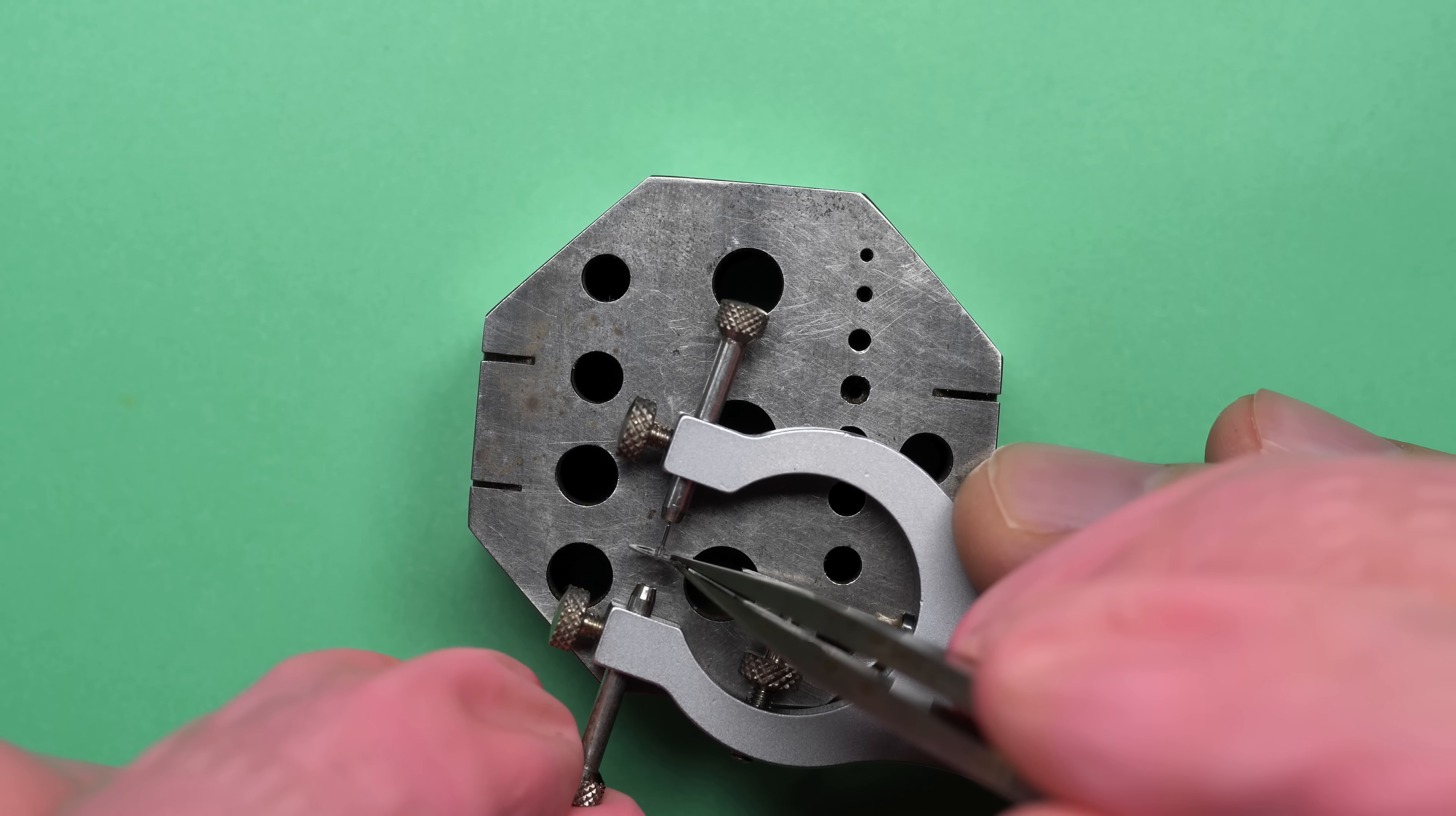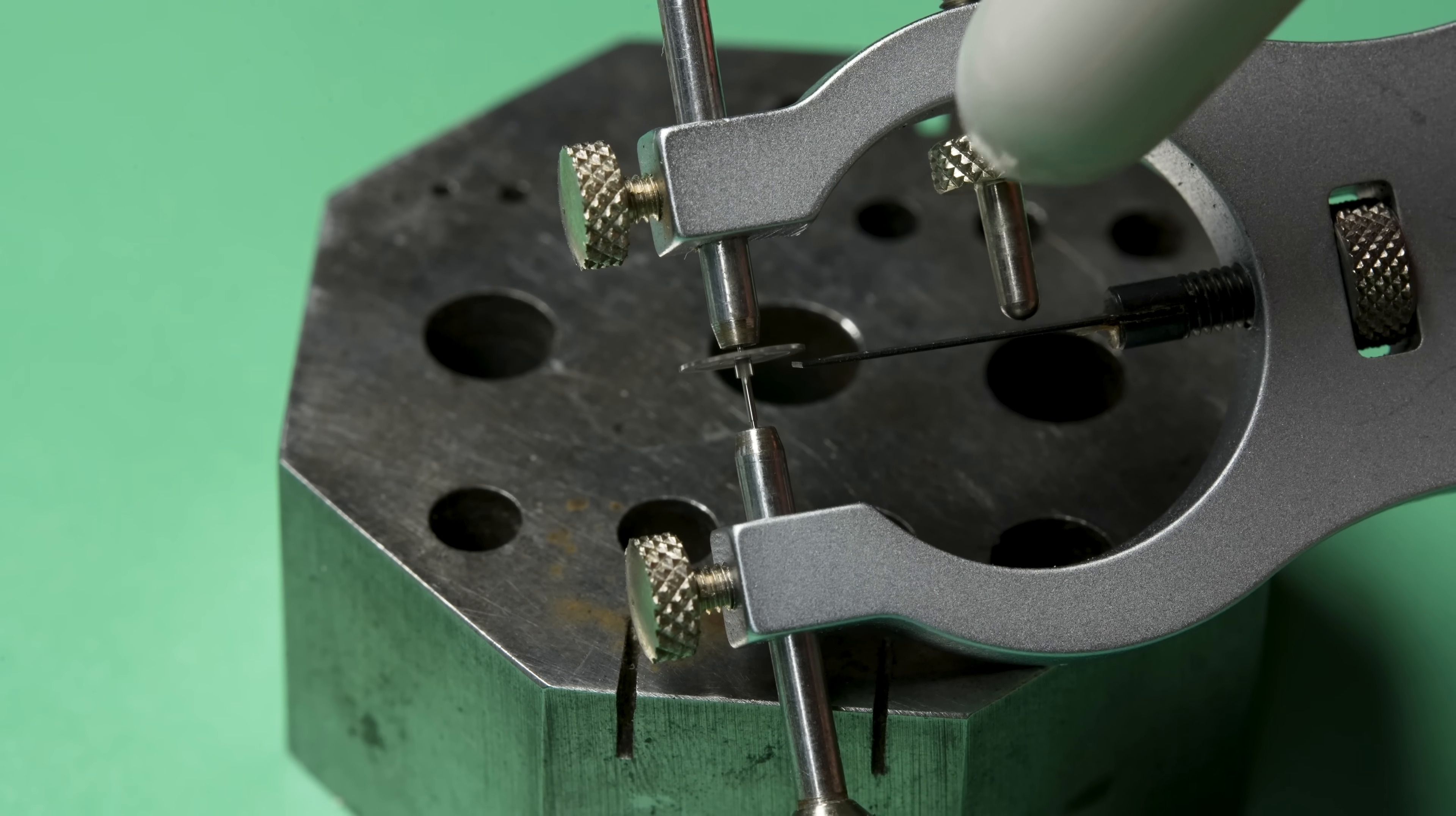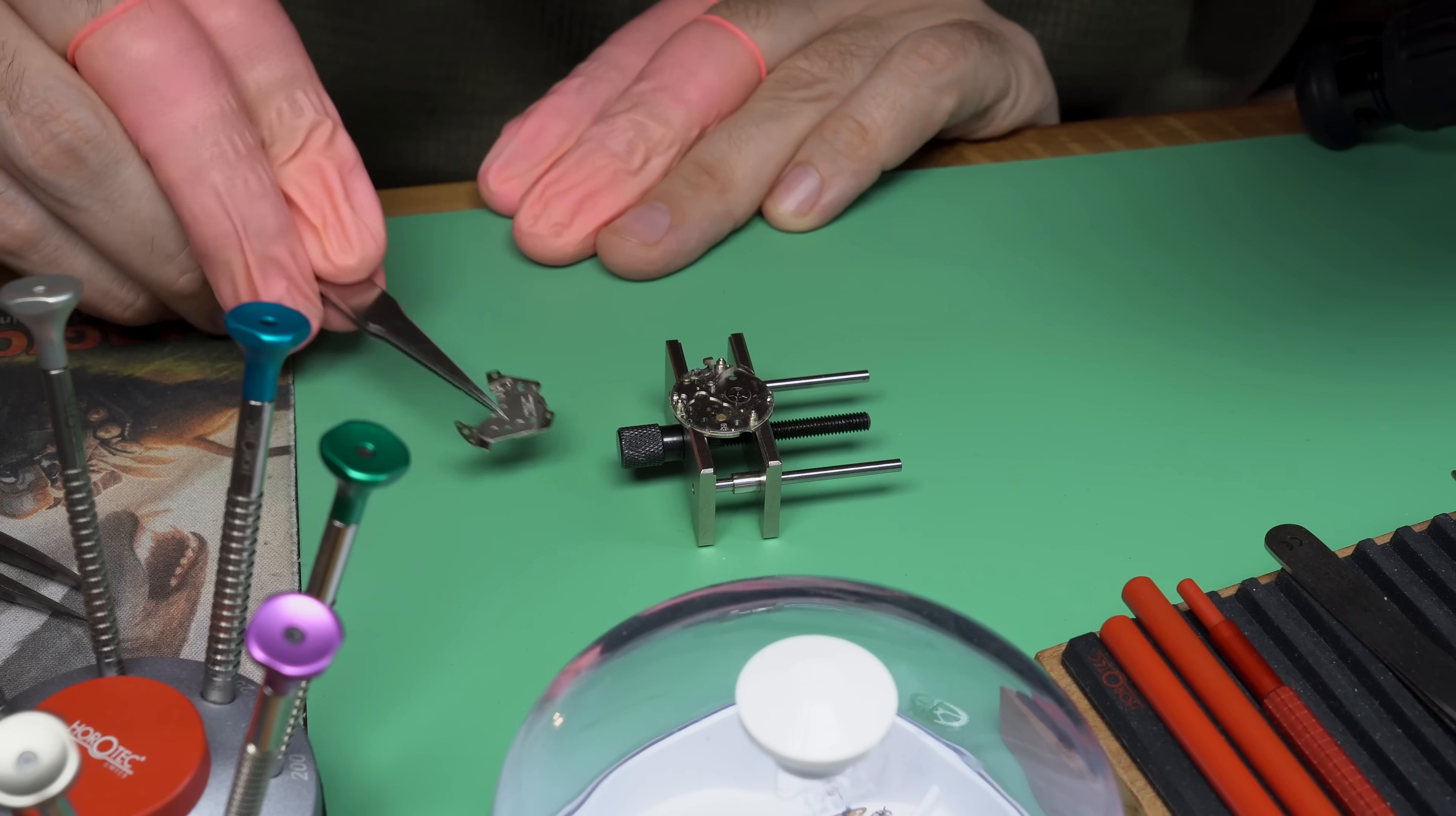So I'm going to put it back on the vernier calipers here. And that'll again, allow me to spin it and see if we've made any improvement. Visually, it looks much better, but we won't really know until this thing spins. Oh, hey, that's way. Wow. That's actually way better. And I honestly didn't think that I would be able to get it that good. So I think we can actually reuse this part and I don't have to go hunting for a donor movement.